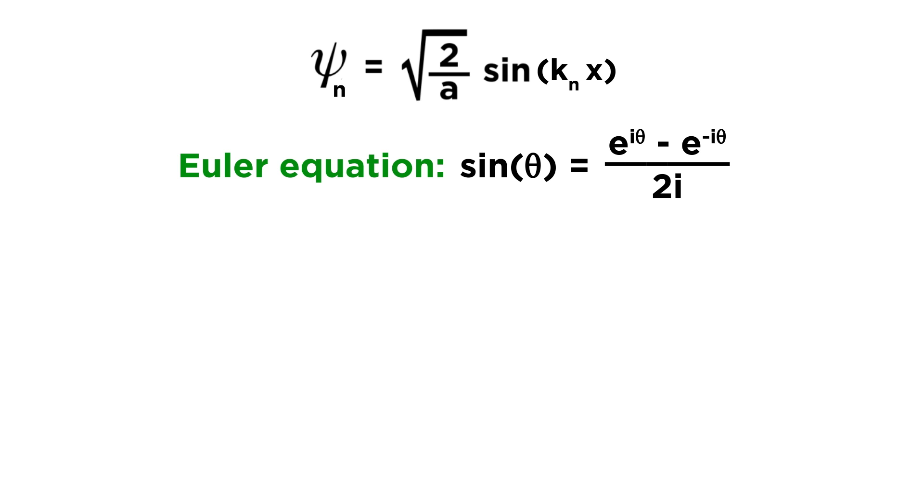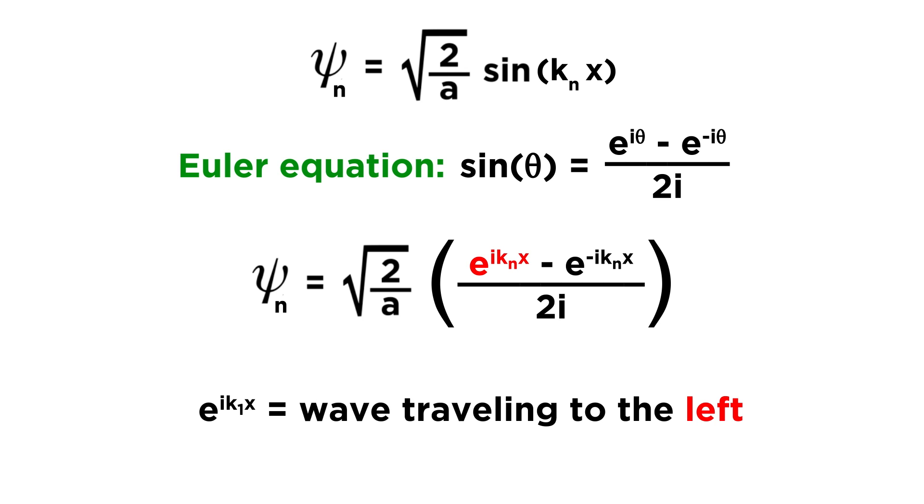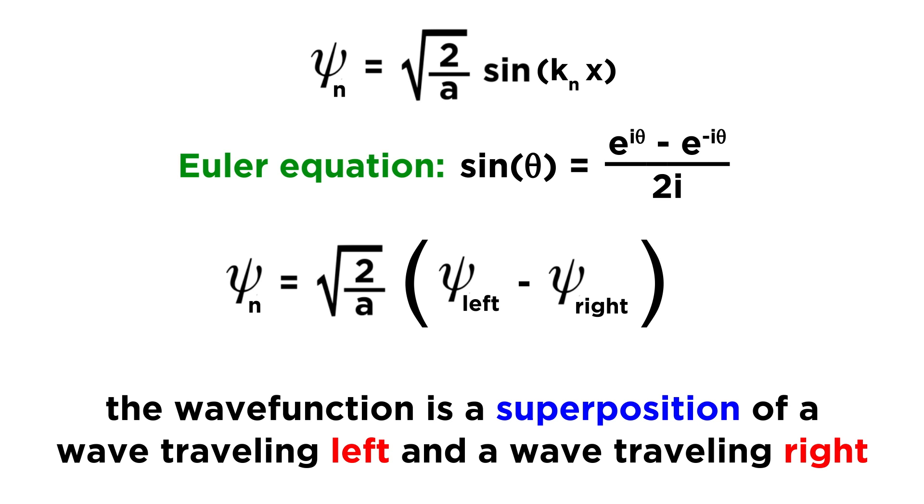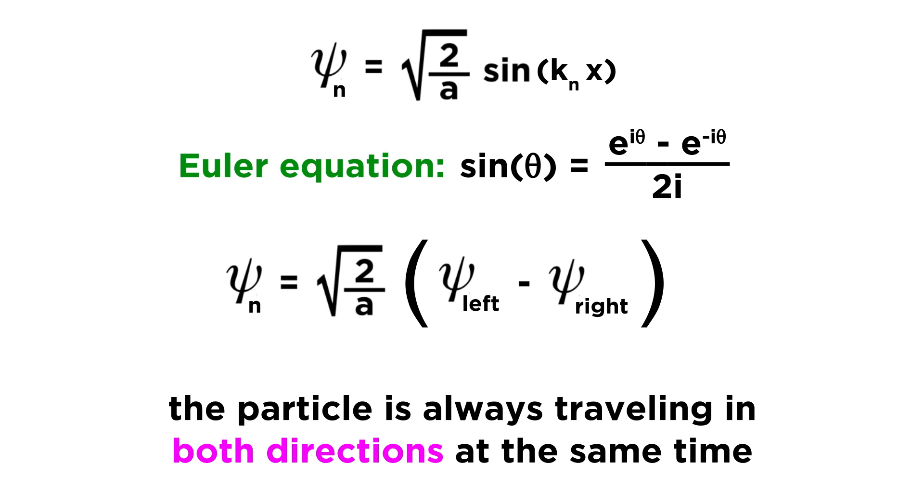Let's recall the general form of the relevant eigenfunctions. Now what we are going to do is use something called the Euler equation. This tells us that sine theta equals the complex exponential of i times theta minus its complex conjugate, divided by 2i. Let's use this in our eigenfunctions, treating k sub n x as theta, and plugging that in where we previously used theta. Now recall from a previous tutorial about wavefunctions that e to the i k1 x is a rough representation of a wave traveling to the left, and e to the negative i k1 x is a representation of a wave traveling to the right. So let's just split up this term into two individual terms and set up the following definitions for psi left and psi right. This means that the parenthetical can be written simply as psi left minus psi right. This formula tells us that the wavefunction psi sub n is a superposition of a wave traveling to the left and a wave traveling to the right, with equal probability.